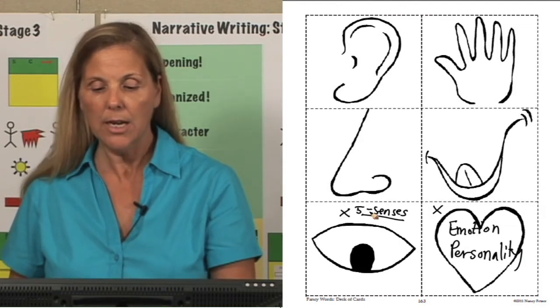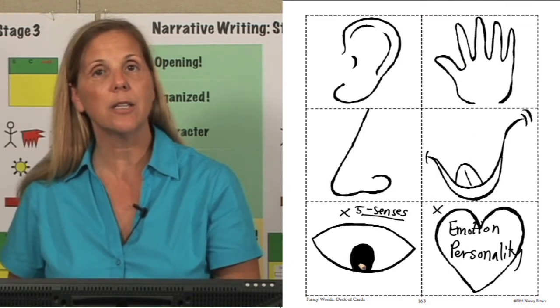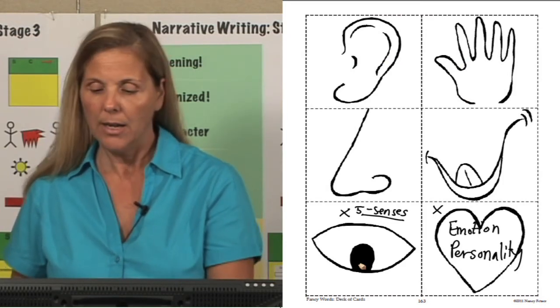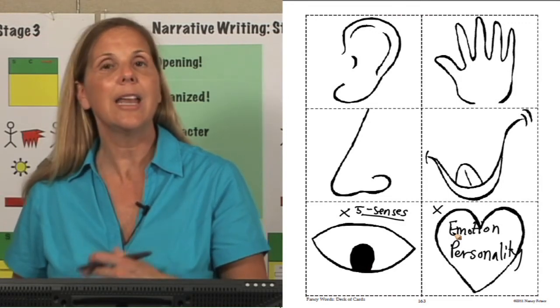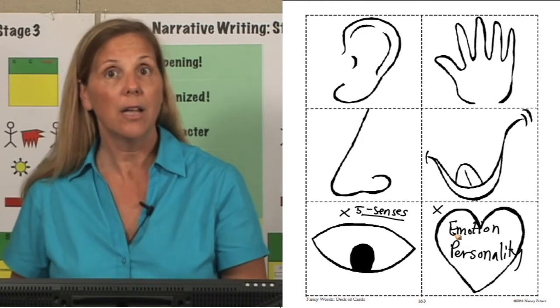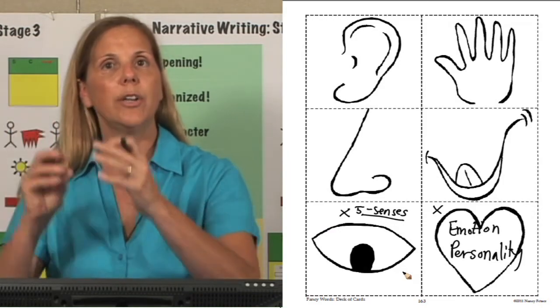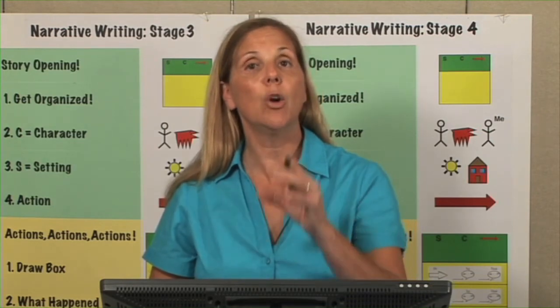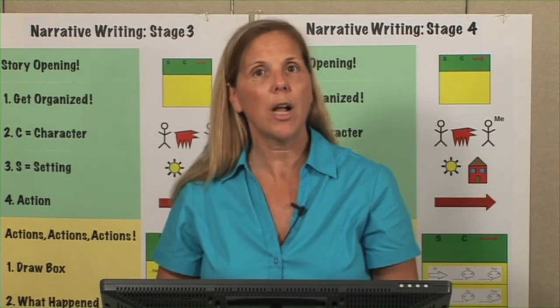We can use the heart to decide if we want to use an emotion word or if we want to use a personality word. Once the children decide which category to go into, five senses, emotion or personality, if they choose five senses, then we would decide which one of the five senses are going to be best to describe that noun. If they choose the emotion, we would write an emotion word. Personality, then it's more of the character trait like grumpy, depressed, happy, silly, a personality trait.